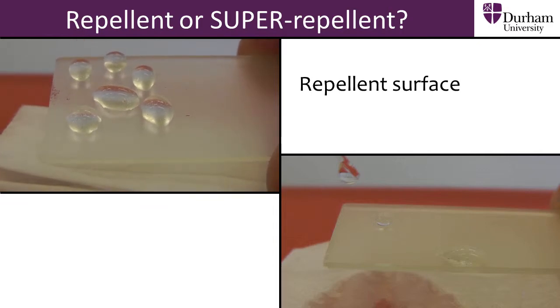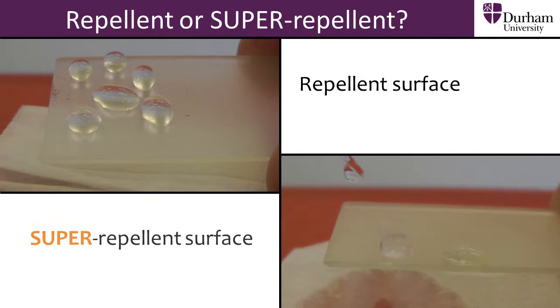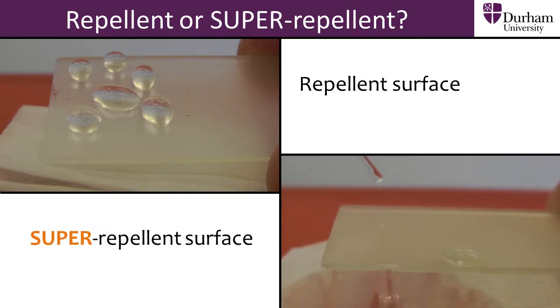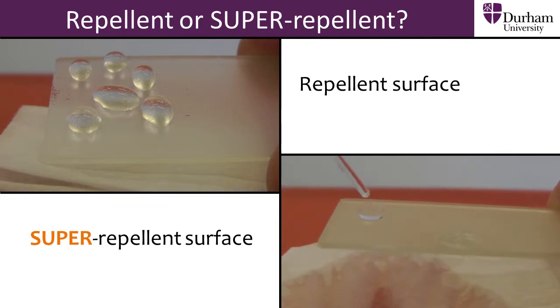A lot of tilting is required for the droplets to roll away. However, when we look at the super repellent surface, we see that there is very little contact between the surface and the droplet.